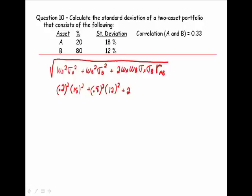Plus two times the weight in A times the weight in B times the standard deviation of A times the standard deviation of B times the correlation. The correlation between these assets is 0.33.